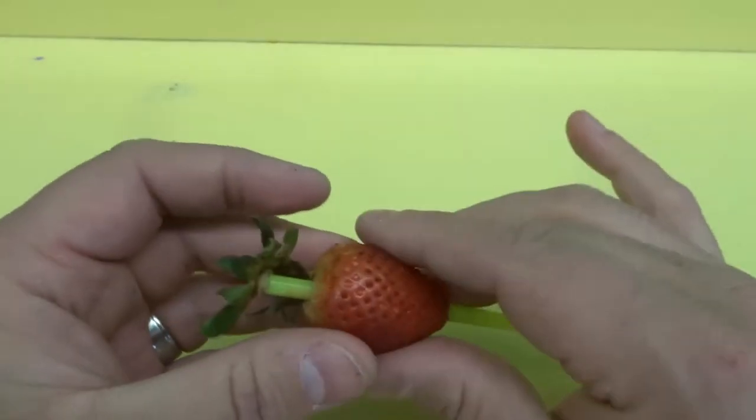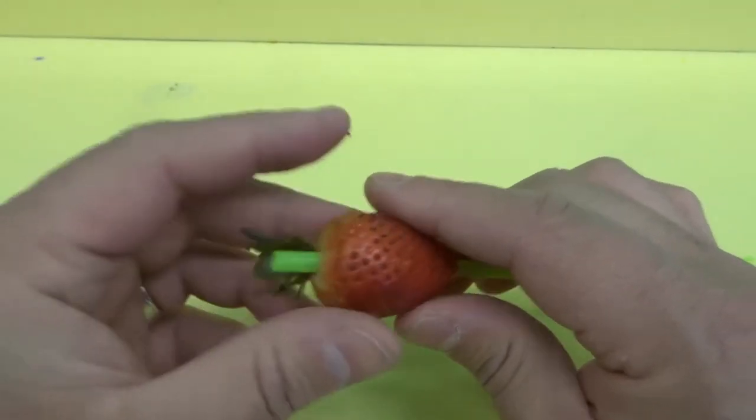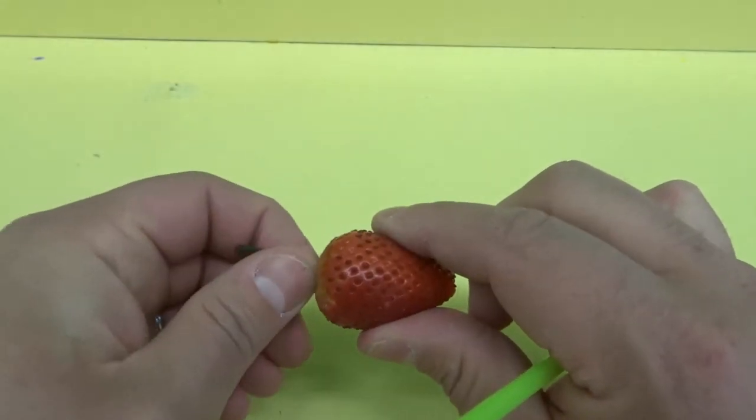Check that out. Look at that. Then what we do is we remove the inside of the strawberry. And as you can see right here, we've cored the strawberry. I can just pull off these leaves right here.